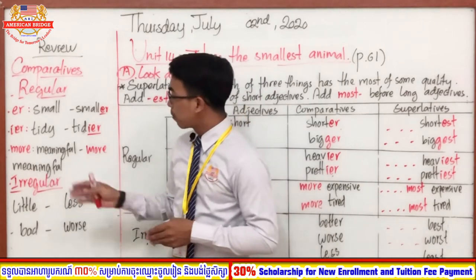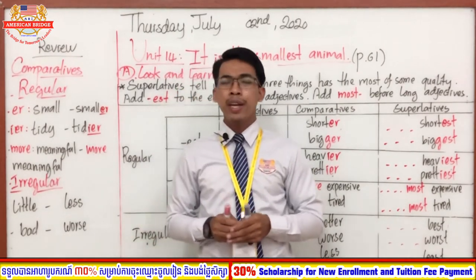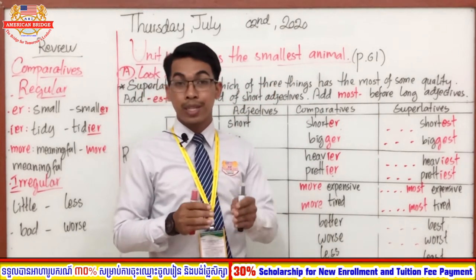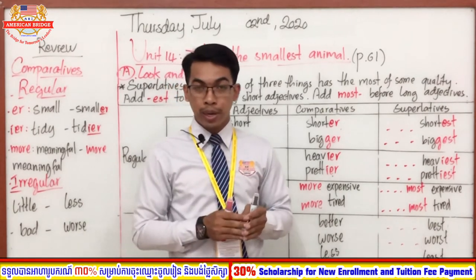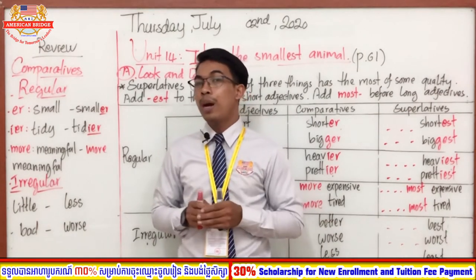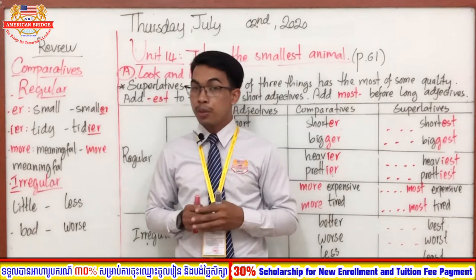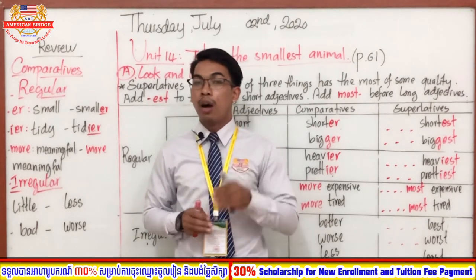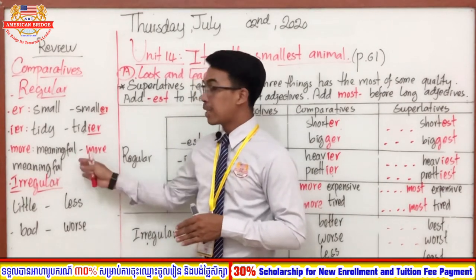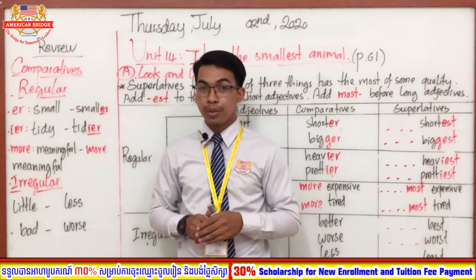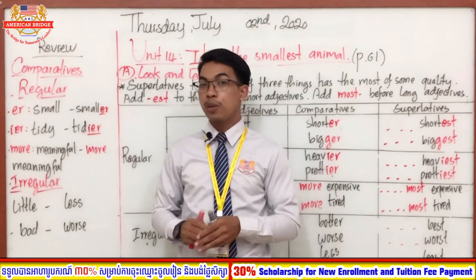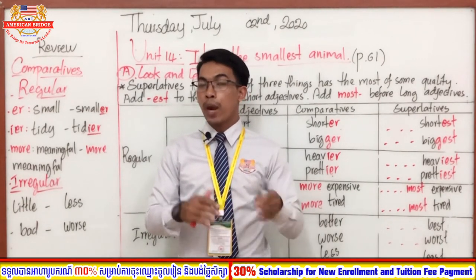The last type of regular comparative is 'more'. We add 'more' before adjectives that have two syllables or more than two syllables — long adjectives. For example, the word 'meaningful' has three syllables, so we just add 'more' before the adjective and it becomes 'more meaningful'.